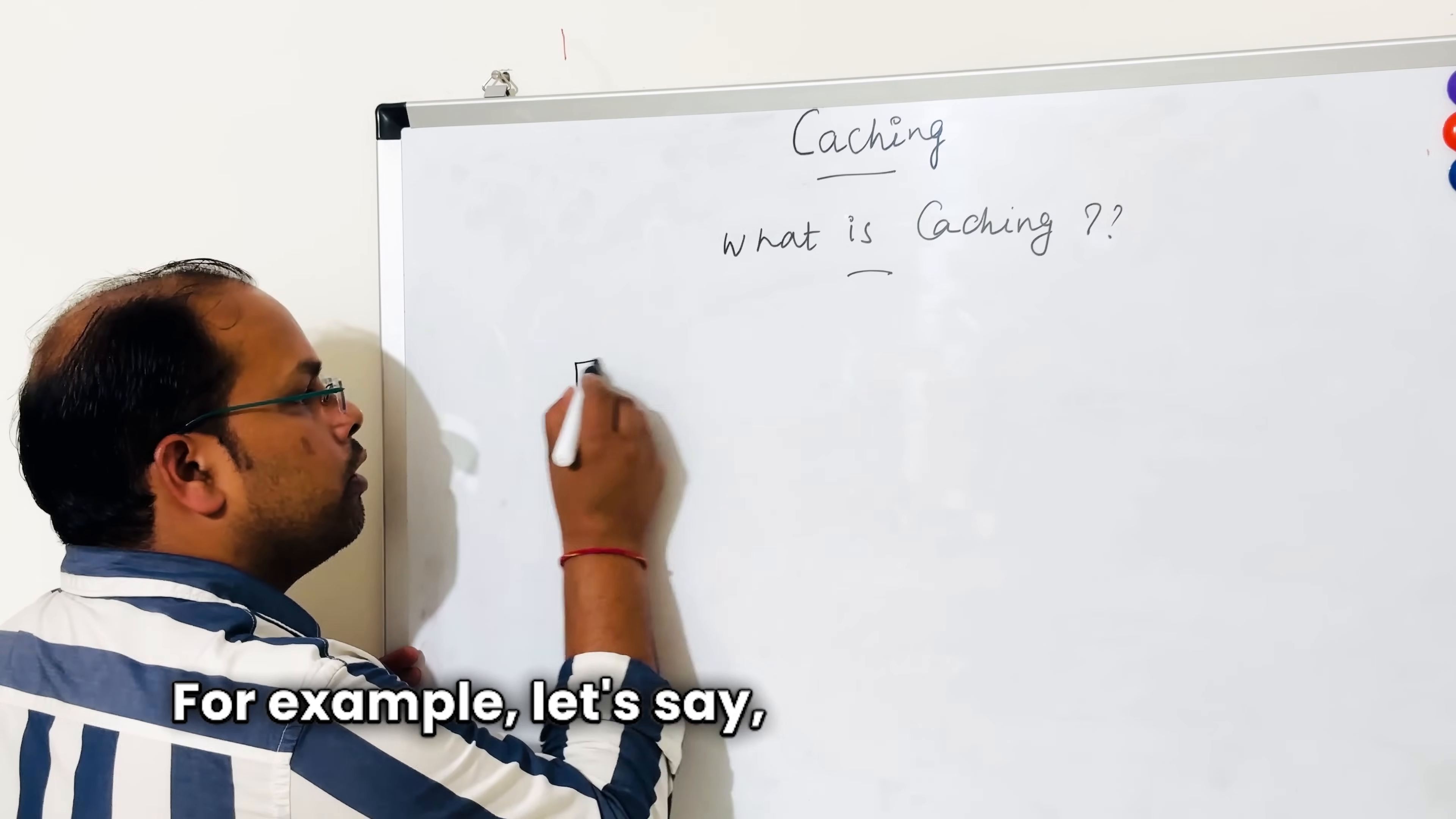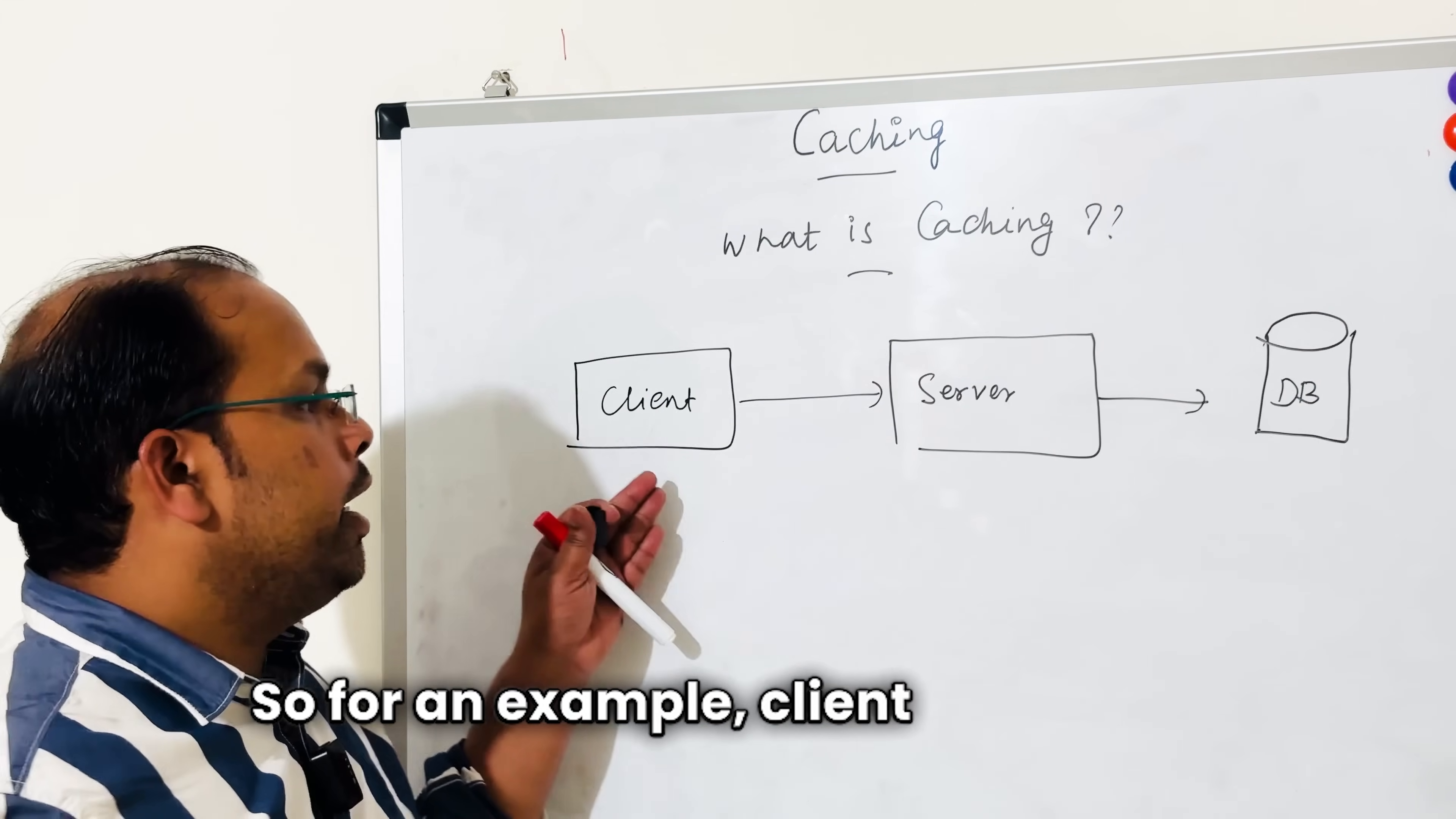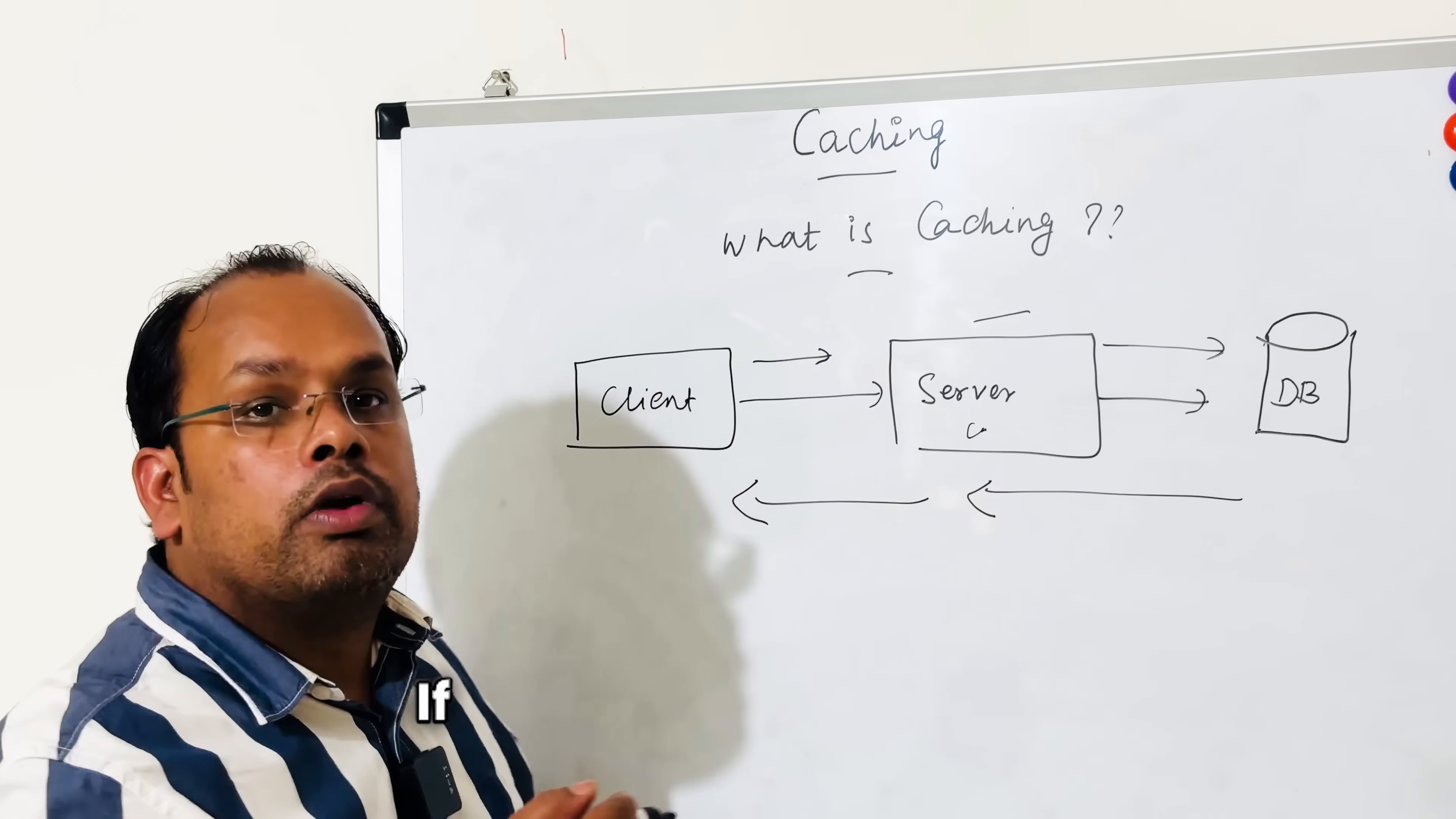Let's understand this with a diagram. For example, let's say this is the client, and this is the server, and this server is talking to some database. For example, the client is fetching some data point from the server.